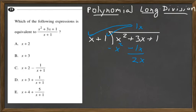How many times does x go into 2x? Well, 2 times. So, plus 2. And 2 times x is 2x. Remember, we're subtracting this. And 2 times 1 is 2, so subtract 2.